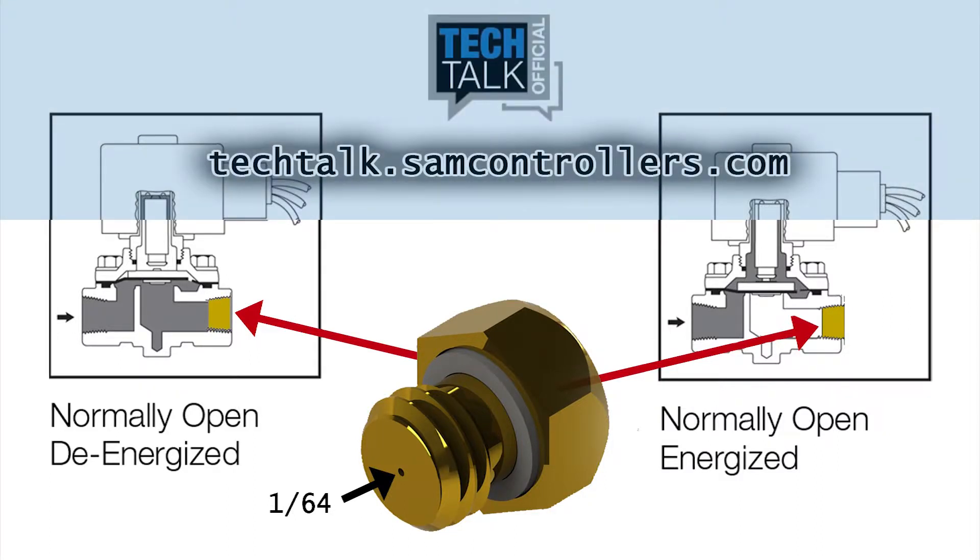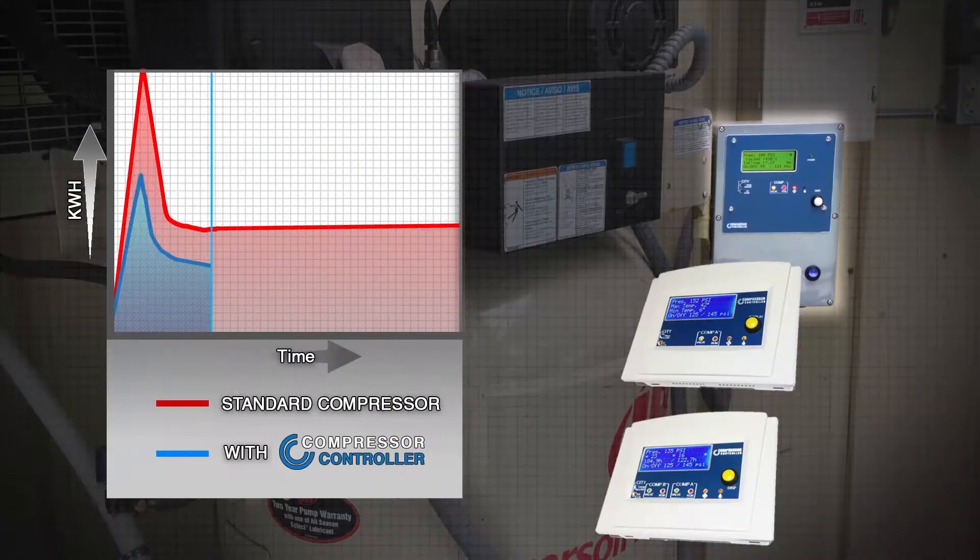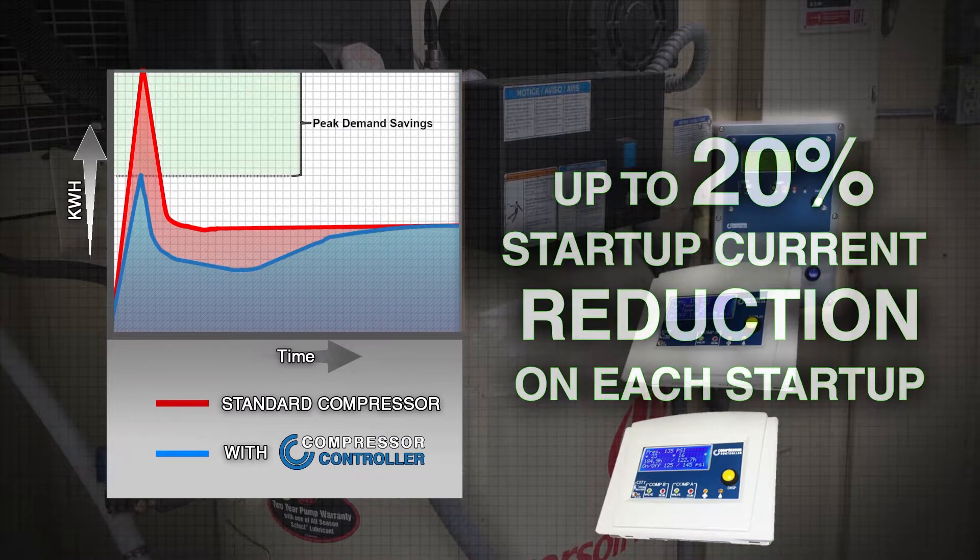The compressor controller closes the unloader valve with varying duration to maximize the pump efficiency, lower the start-up current, and reduce the wear and stresses on the compressor pump.